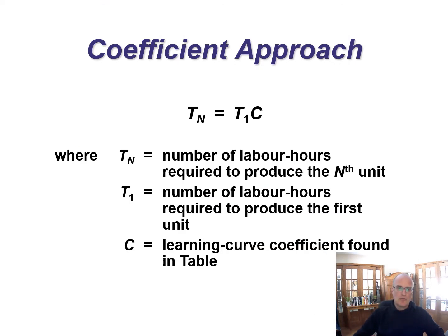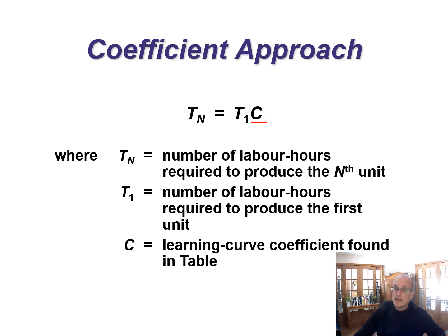The third approach is like the logarithmic approach, but someone calculates n to the b for you. The time for the nth unit equals the time for the first unit times a coefficient that you pull from a table in your textbook. The only drawback is that you have to have a very precise learning rate to be able to use the table. So this one is more flexible than the arithmetic approach because you can do any number, but you have to have a learning rate that is in your table.